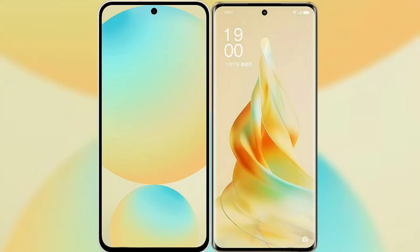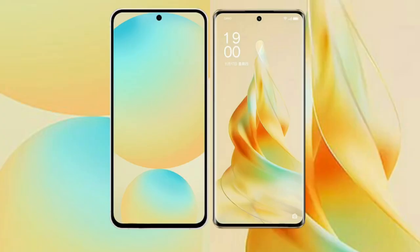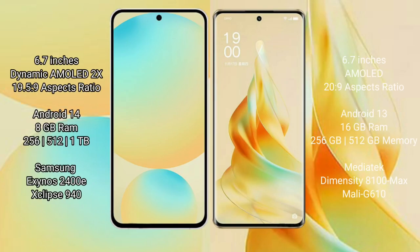Comparing the Samsung Galaxy S24 FE with the Oppo Reno 9 Pro. Samsung Galaxy S24 FE features a 6.7-inch Dynamic AMOLED display with an aspect ratio of 19.5:9. Oppo Reno 9 Pro features a 6.7-inch AMOLED display with an aspect ratio of 20:9.